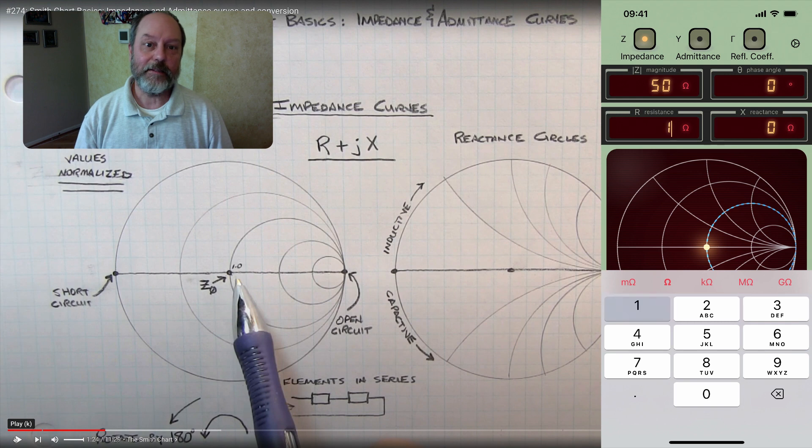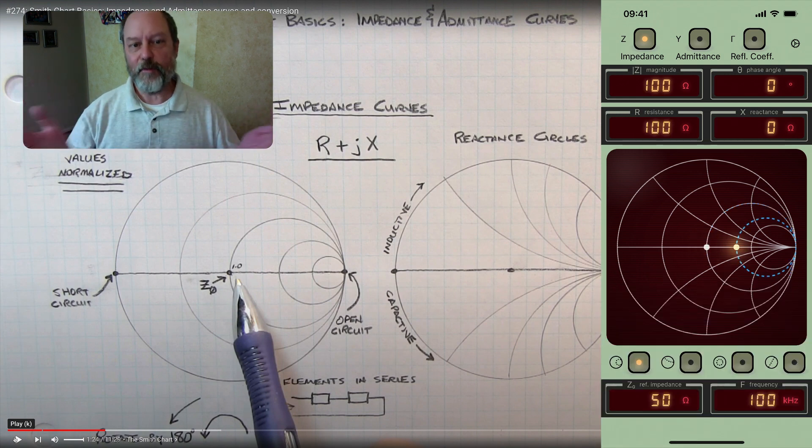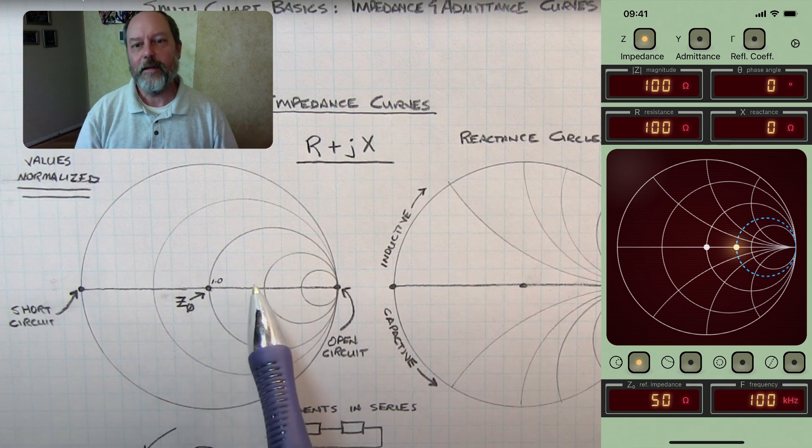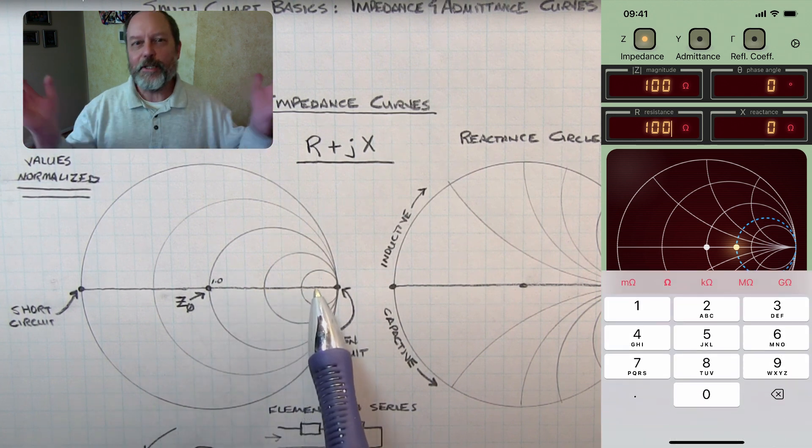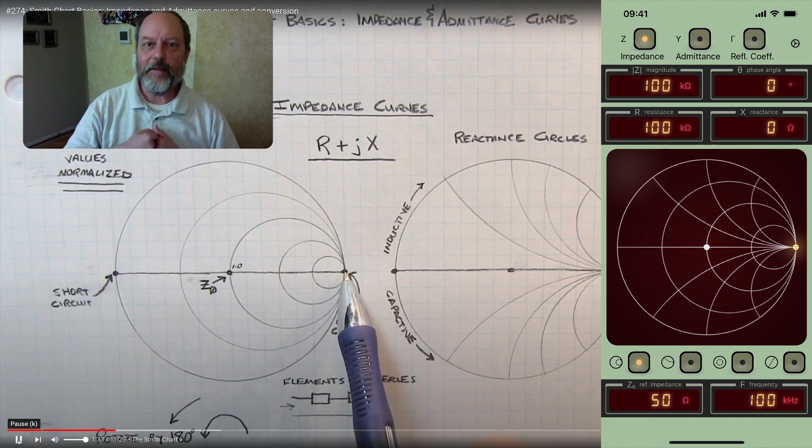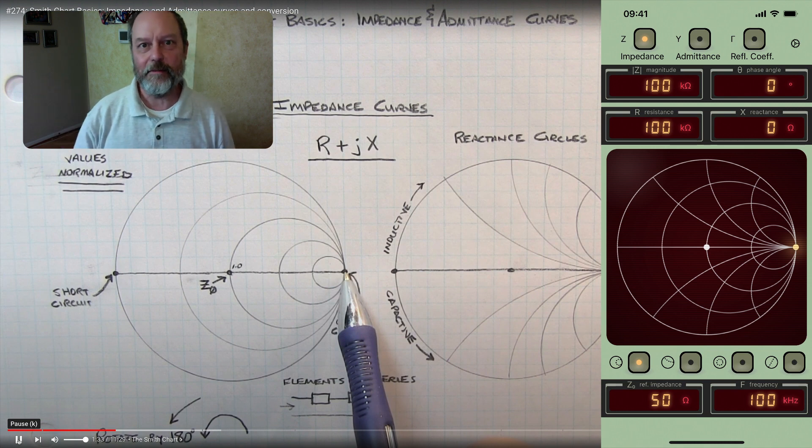Now if you change the impedance to some larger value than 50, let's say if we put in 100 ohms, you'll see that the impedance moves towards the right. And then if you enter an even larger value, let's say 100 kiloohms, you'll see that the impedance moves towards the limit of infinite impedance, an open circuit on the right-hand side of the Smith chart.